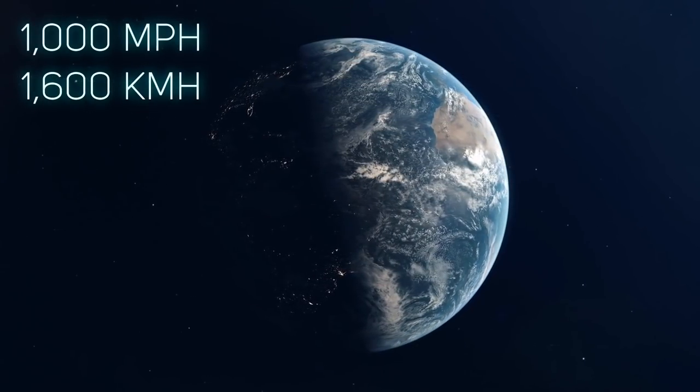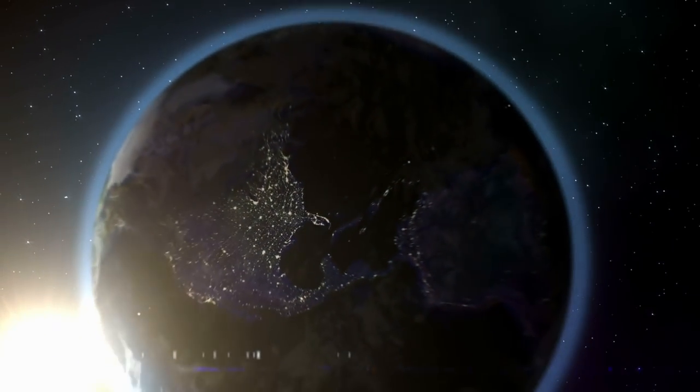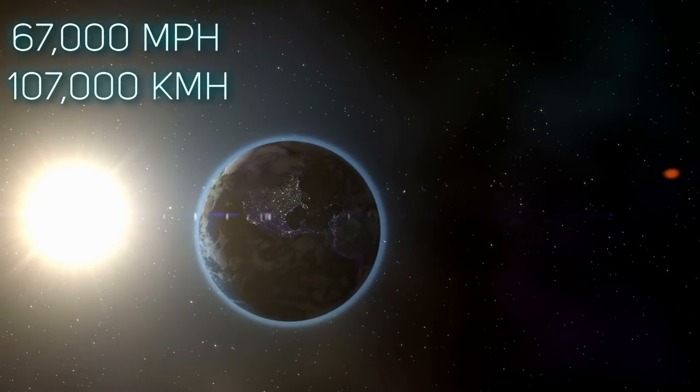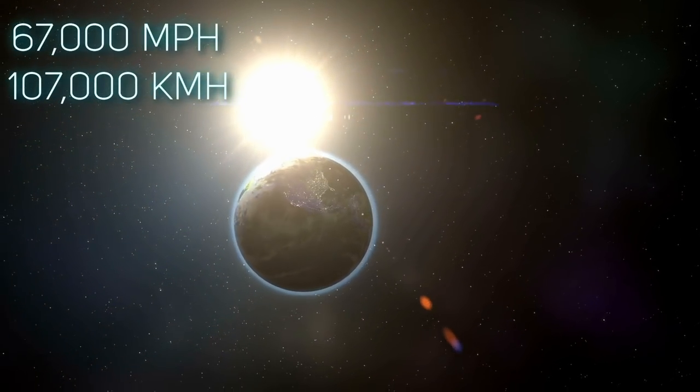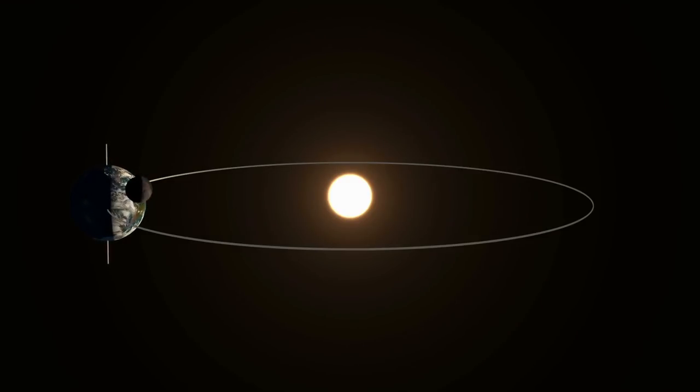All while orbiting the sun at about 67,000 miles or 107,000 kilometers per hour. The only reason we are not hanging on for dear life is that we are moving with it at the same constant speed.